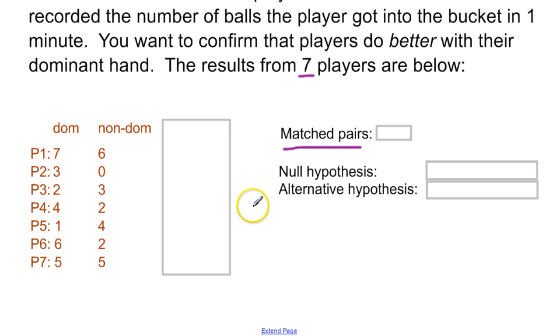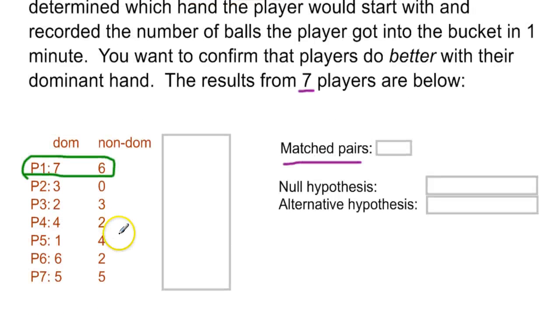But whenever it's a dominant and a non-dominant of a single person, each of these rows here represents a new individual who participated in this study. That's when you know that that is a single entry. These two values are inherently locked. And as a result, what you need to do is you need to subtract them.